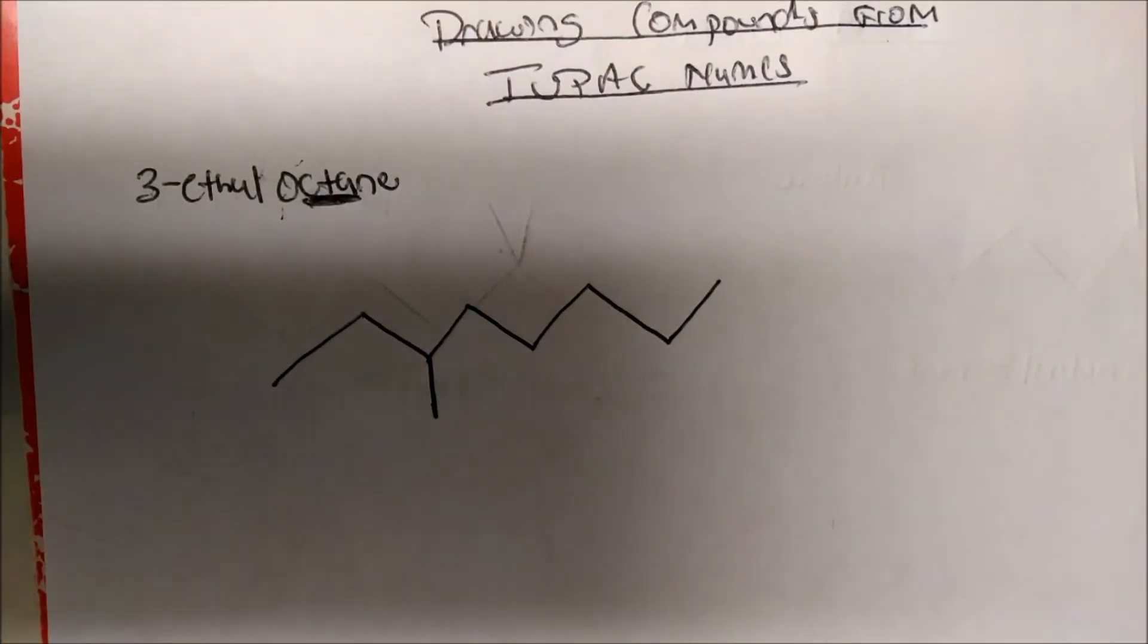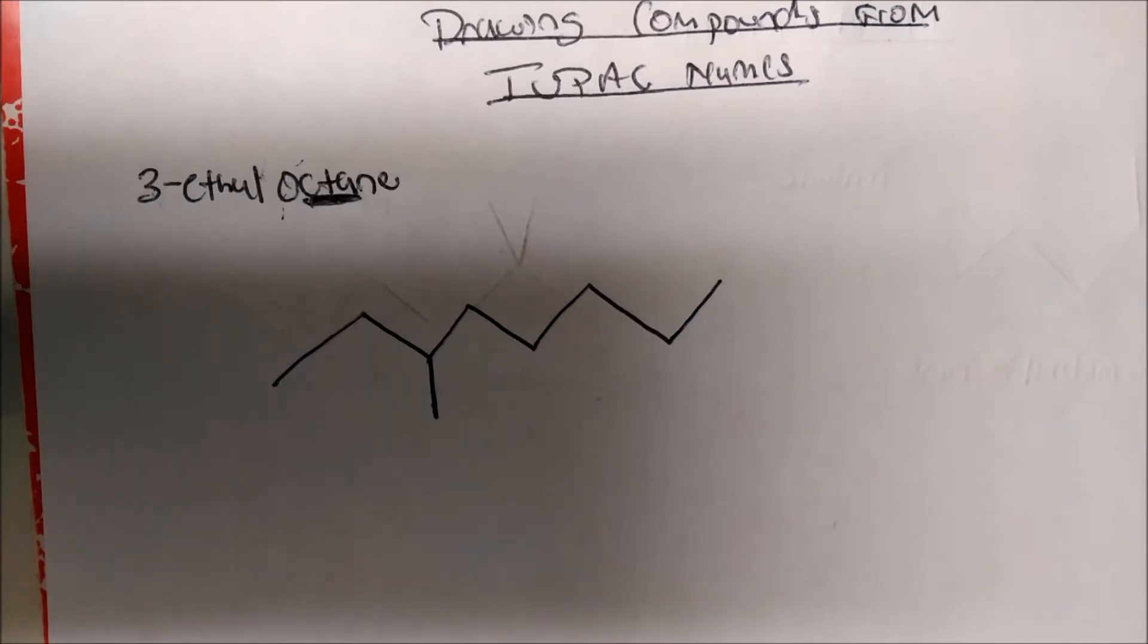An ethyl is actually one branch more. Because remember, methane is CH4, ethane is actually C2H6, you're just basically adding a carbon. And as you add carbons, you also add hydrogens.